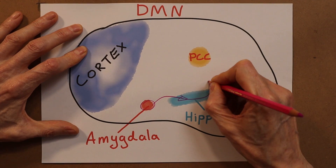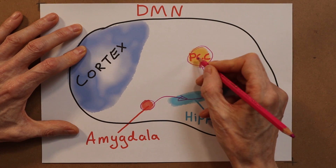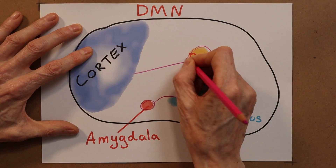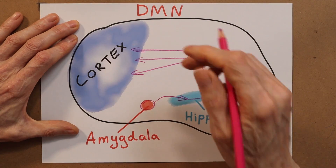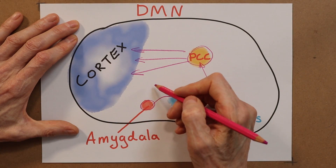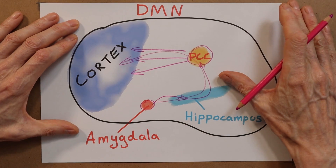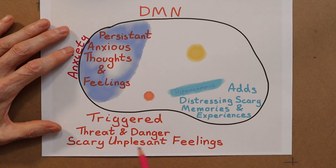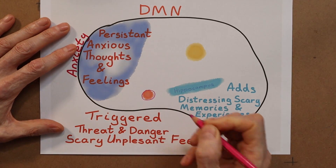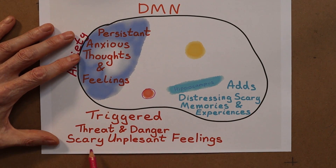This additional information is sent up to a processing center — the posterior cingulate cortex — which then relays it forward into the cortex of the brain, where your mind is. If this network, the default mode network, is overactive, your cortex is being excessively bombarded with distressing and anxious thoughts. To give you a more illustrative diagram: the amygdala, scanning the environment, becomes triggered by potential threats and danger even when there isn't actually any, and it produces these scary, unpleasant feelings.